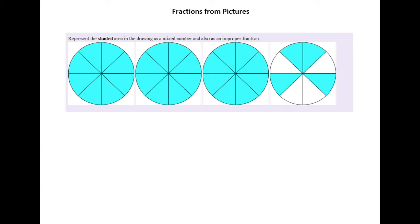In this example we are going to represent the shaded area in this drawing as a mixed number. First of all, if we have objects that are completely shaded in, we really don't care how many slices they're divided into — we can just count each one of them as one whole. So we have three wholes in this example.